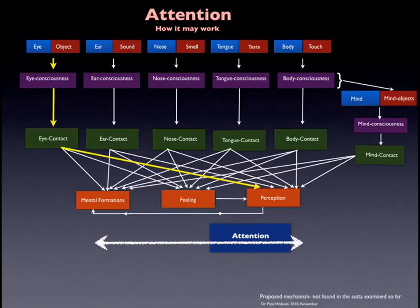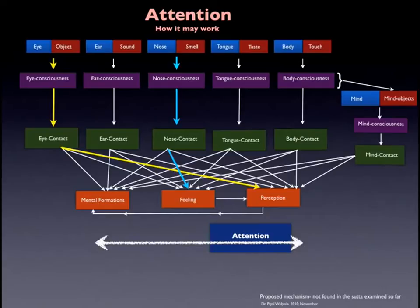If you immediately close your eyes and smell the flower, the blue track will happen — that is the nose and the smell of the flower. Nose consciousness arises, you recognize the smell of the flower, and there is nose contact — the meeting of these three. There is a feeling of the aroma: you may like it (pleasant feeling), dislike it (unpleasant feeling), or there could be a neutral feeling.